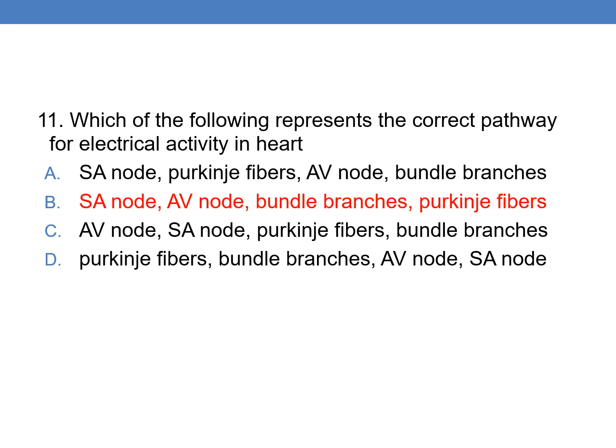Which of the following represents the correct pathway for electrical activity of the heart? The electrical activity passes through the SA node, AV node, bundle of His, bundle branches, and finally through the Purkinje fibers. Option B is the right answer: SA node, AV node, bundle branches, and Purkinje fibers.